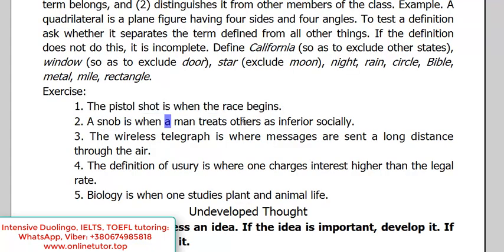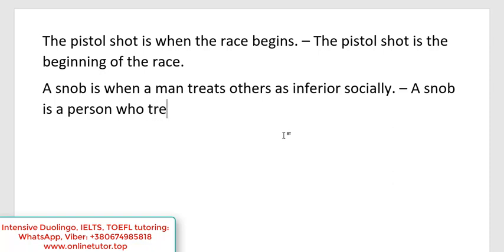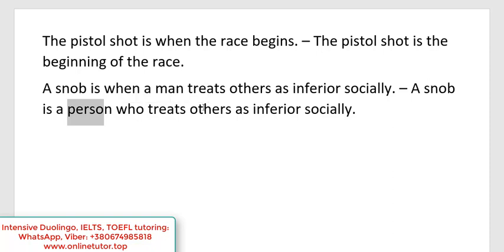One more example: 'A snob is when a man treats others as inferior socially.' Let's think — how can we write this correctly? There are several variants, of course. For example: 'A snob is a person who treats others as inferior socially.' Here I have a noun as the subject and a noun as the predicate. Some might write 'A snob is to treat others as inferior' — that's also wrong. We shouldn't write or speak like that.